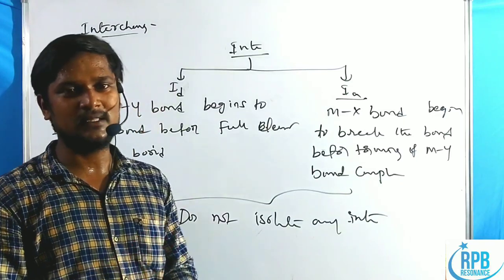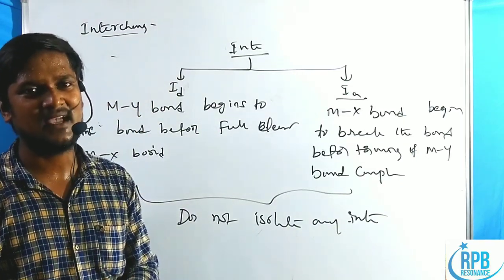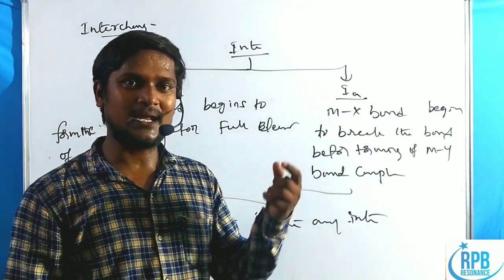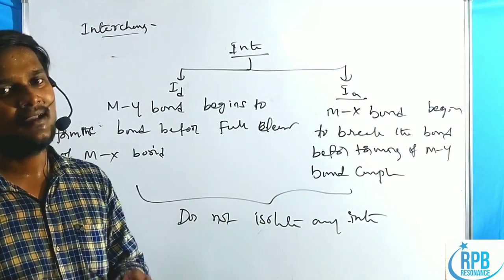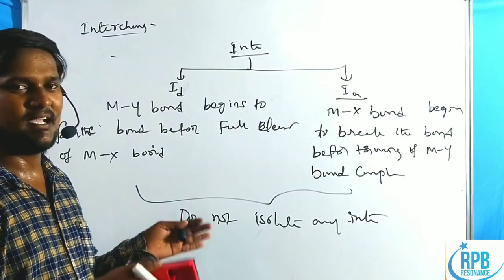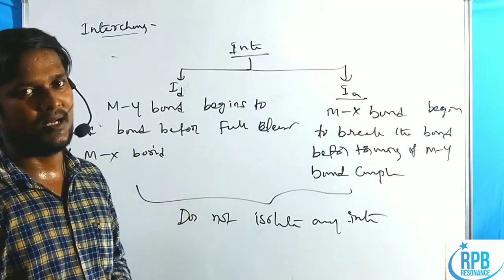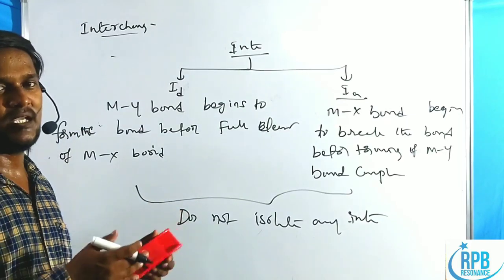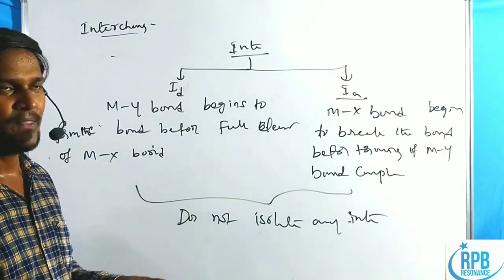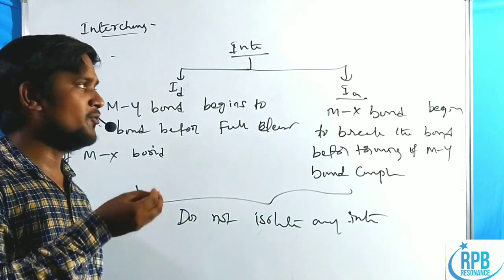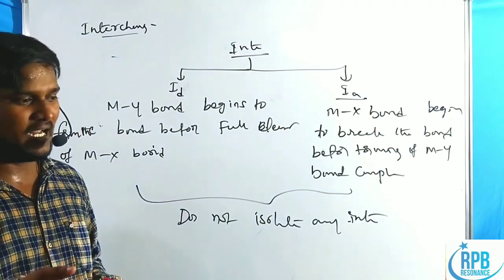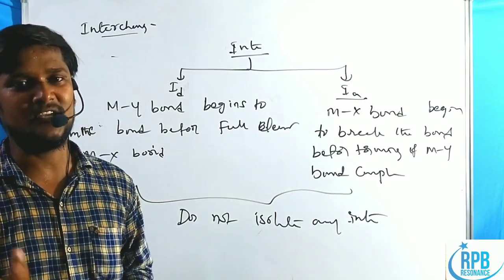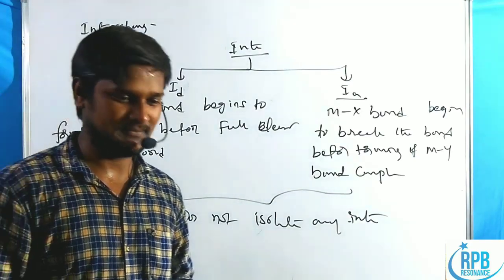In summary, we have discussed all types of substitution mechanisms in octahedral complexes: associative, dissociative, and interchange mechanisms. The same mechanisms also apply to square planar molecules, which will be discussed in the next lecture. These mechanisms are the pillars of reaction mechanism chemistry in coordination chemistry. Thank you for watching.